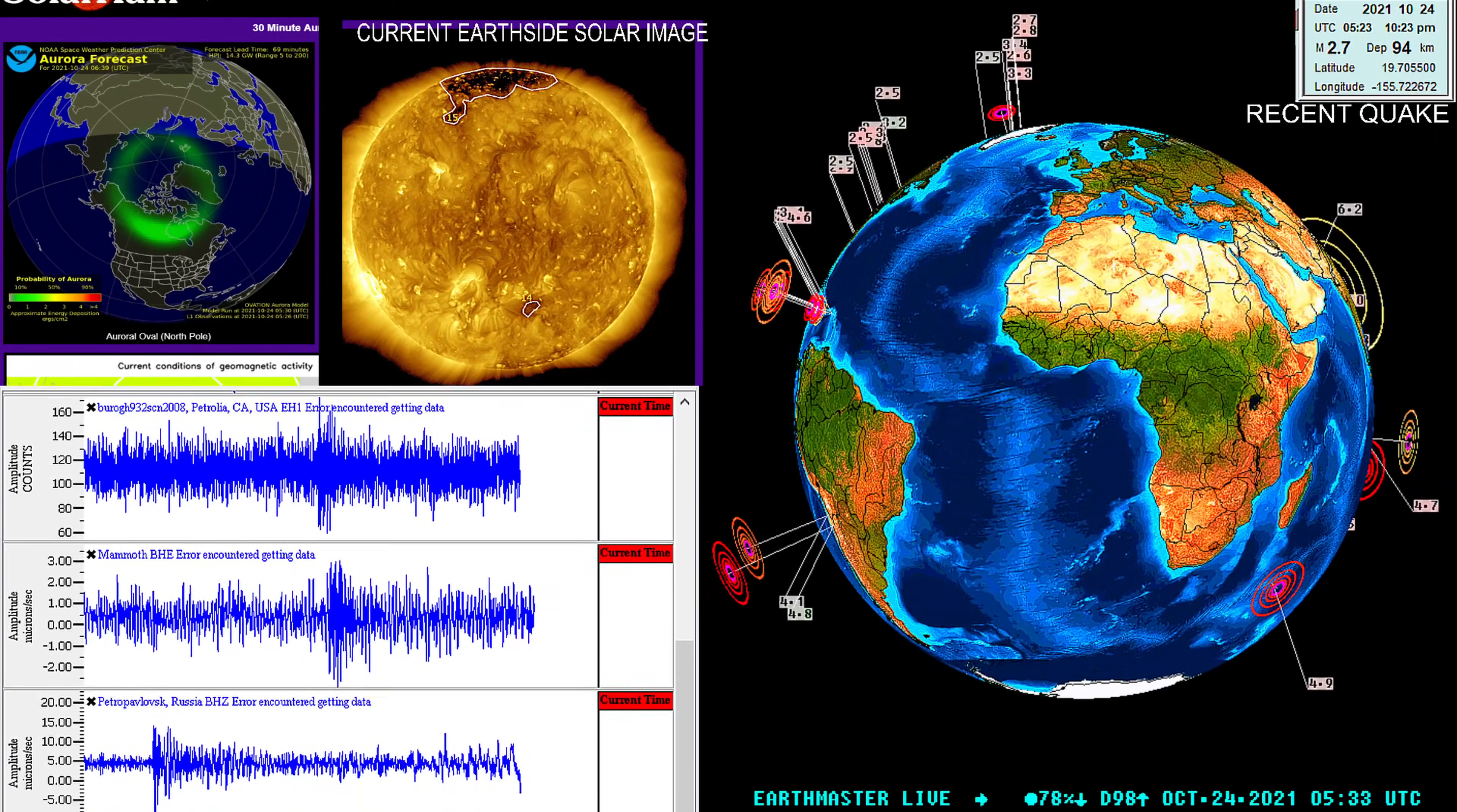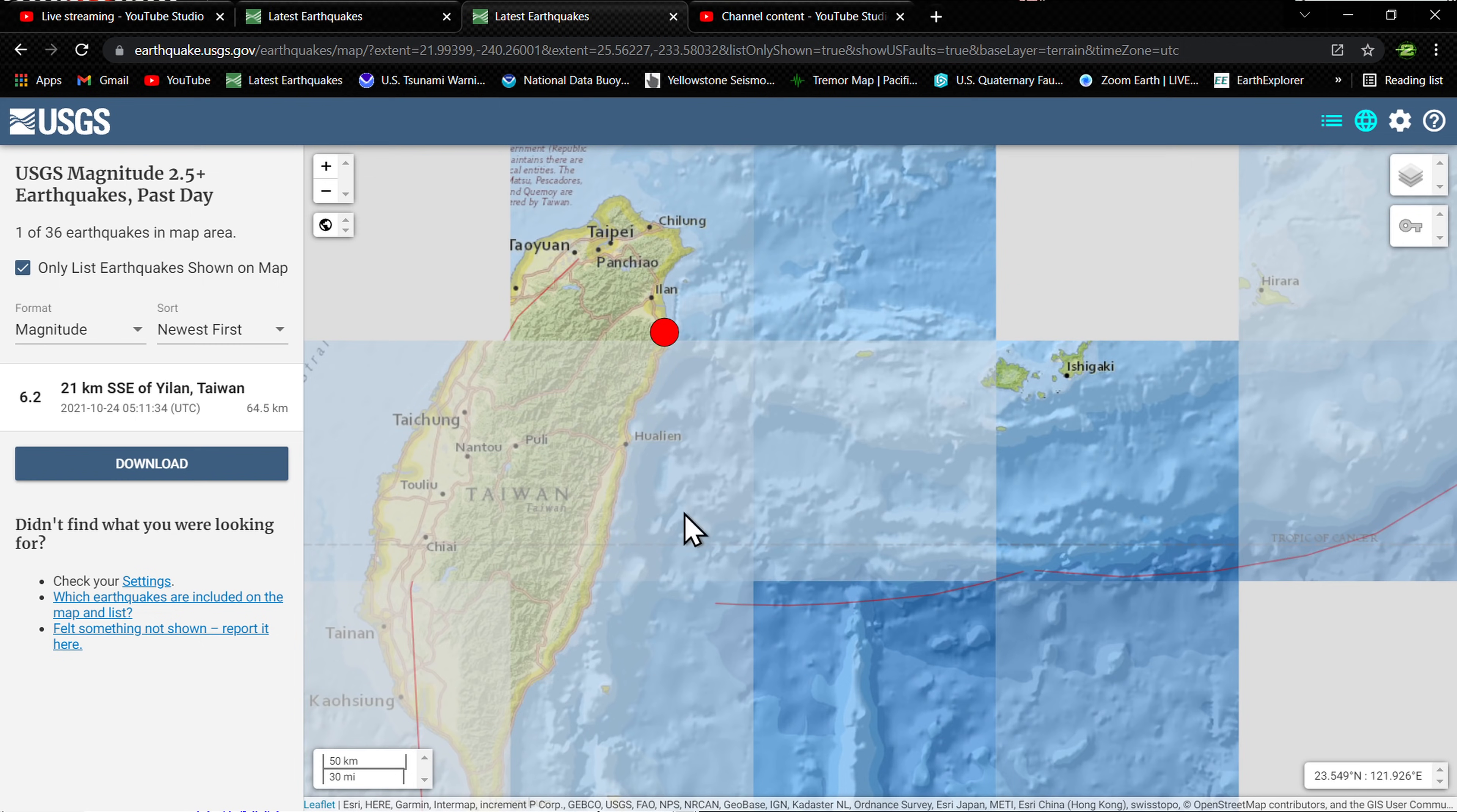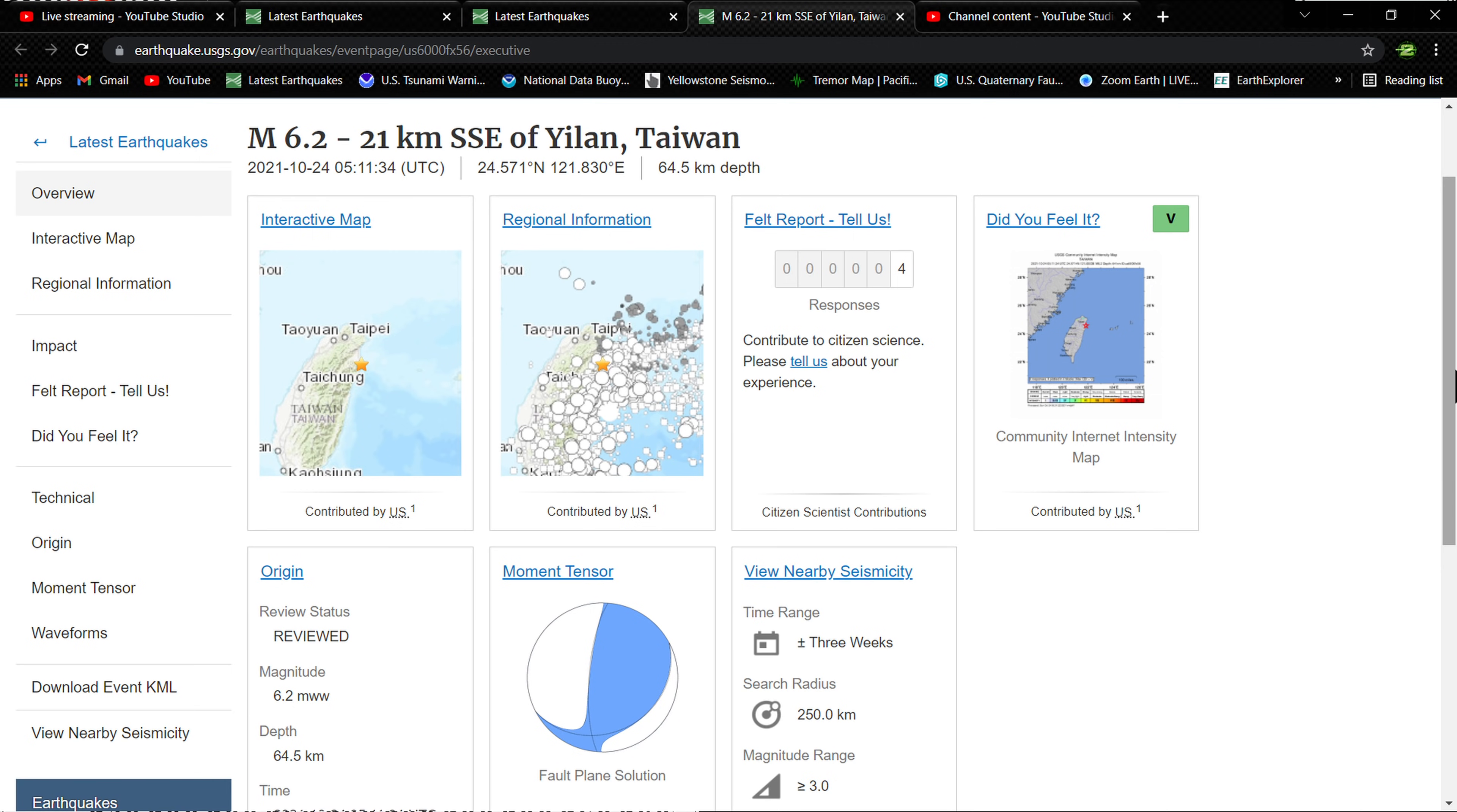Let's go ahead and check out some specifics of that earthquake on the USGS map. You can see that pretty strong earthquake right around the Taiwan area. Pretty shallow as well for this region, about 64 kilometers below surface, 6.2. Everything looks to be in the green as far as the pager and the potential for any type of damage at the moment.